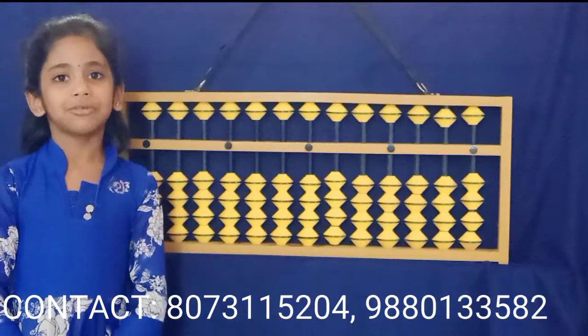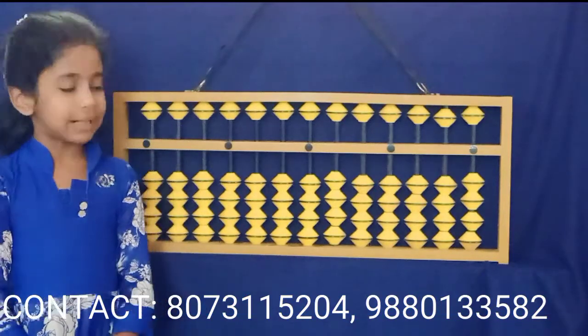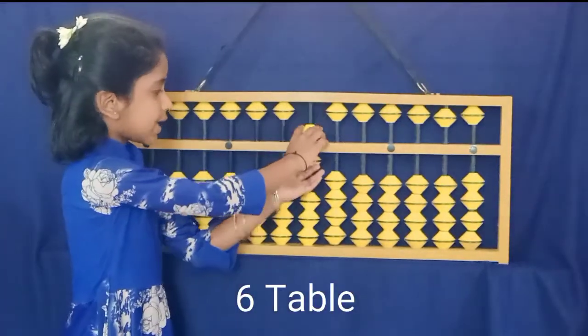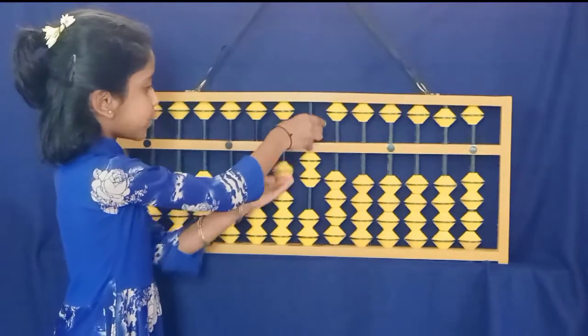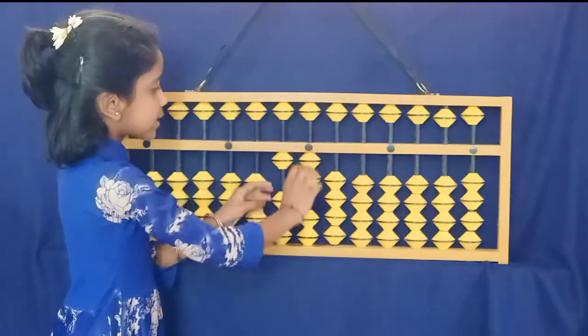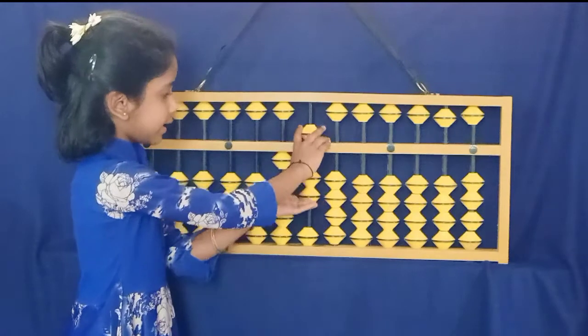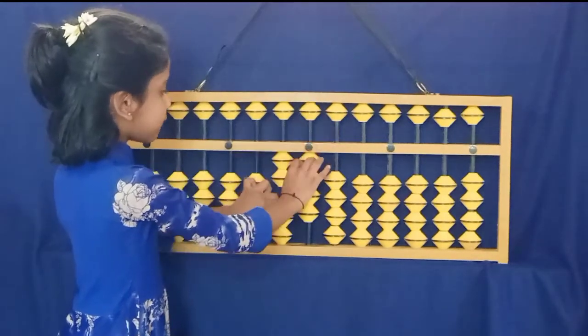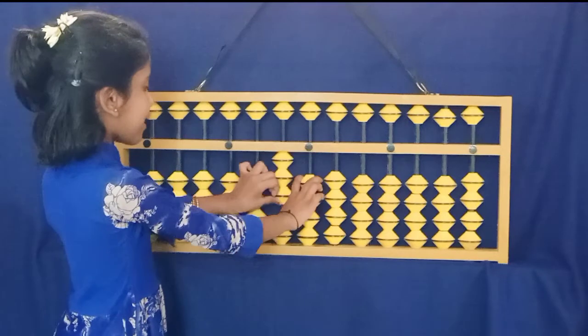Now I am doing 6-1s are 6, 6-2s are 12, 6-3s are 18, 6-4s are 24, 6-5s are 30.